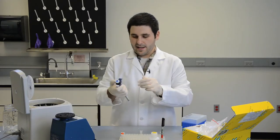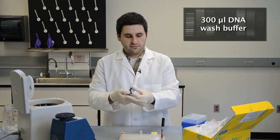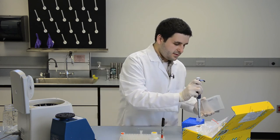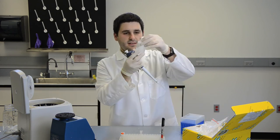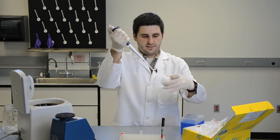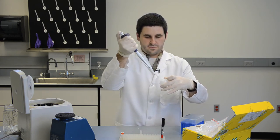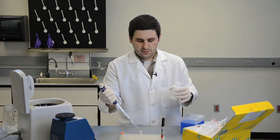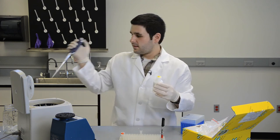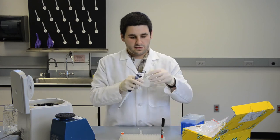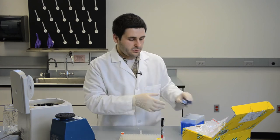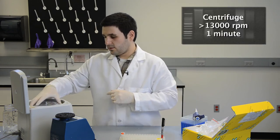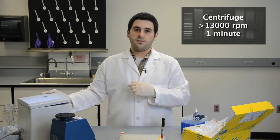We want to add 300 microliters of this DNA wash buffer directly to the filter cartridge. Most of these DNA wash buffers, depending on which kit you use, you need to add ethanol to this. Make sure you add ethanol directly to the wash buffer before starting your protocol. Once that's added, you want to centrifuge it at 13,000 RPMs for one minute.